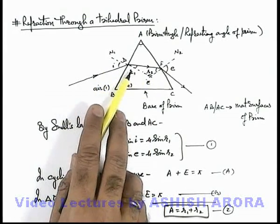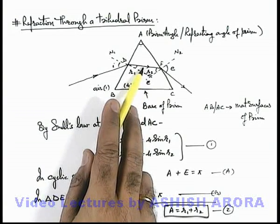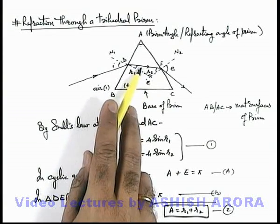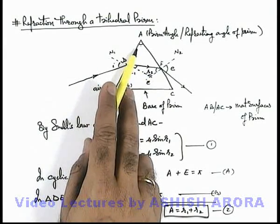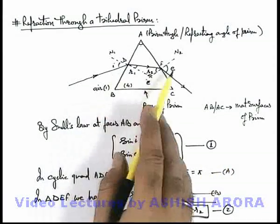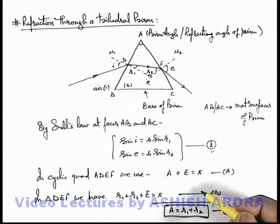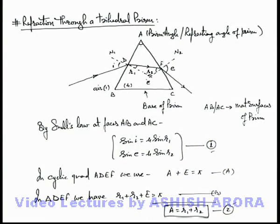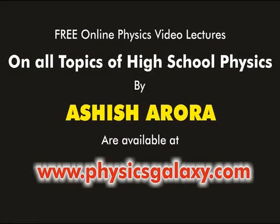You should always keep in mind that r1 and r2 are the angles made by the refracted ray in the prism with the two normals, and the sum of these two angles is equal to the prism angle. Snell's Law is applicable on both surfaces. Keep both of these equations in mind. In the next section we'll discuss the deviation of the light ray through the prism.